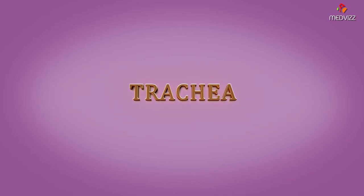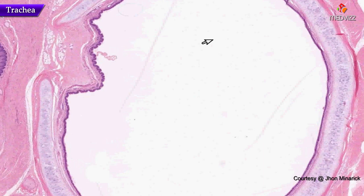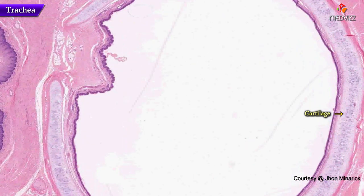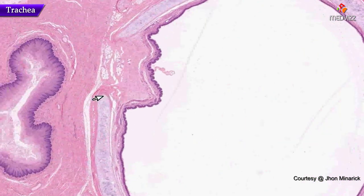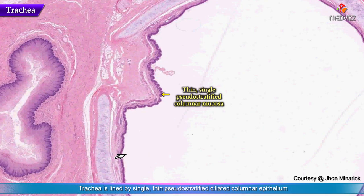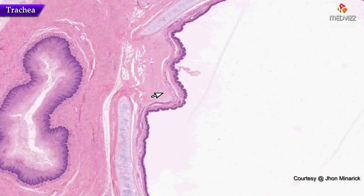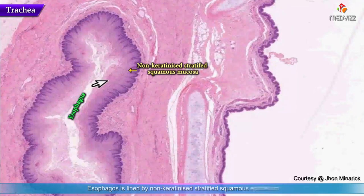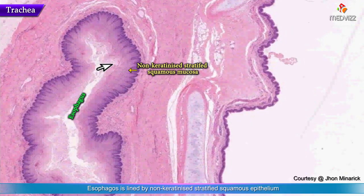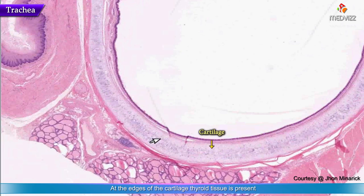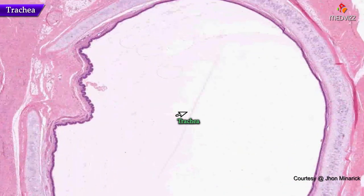Classical trachea. What do we have here? We have a large space filled with air. We have cartilage surrounding this space almost completely, with a small area where there's an absence of cartilage. It looks like we have a thin, perhaps single or pseudostratified columnar mucosa, which we'll examine more closely. We can also see some fat and another tubular structure lined by a non-keratinized stratified squamous mucosa with no skin appendages. At the edges of the cartilage ring we can see thyroid tissue. This is a classical trachea.